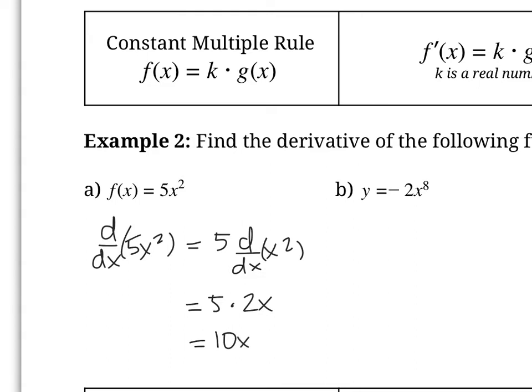Essentially, all we're doing is multiplying that coefficient in front by the derivative. So we actually don't need to show the in-between step every time. For example, y prime here: we bring that 8 down in front and multiply it by negative 2, giving us negative 16 times x to the power of 7.